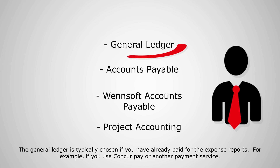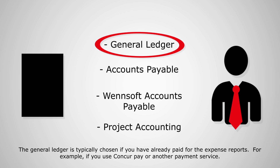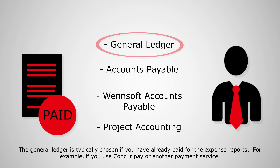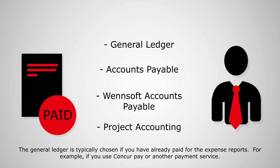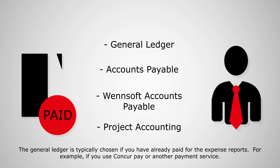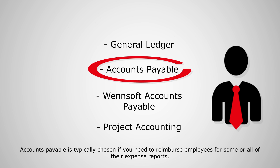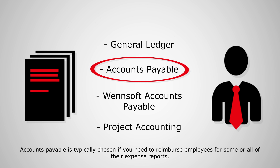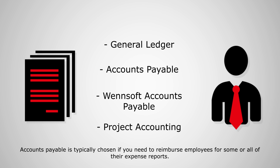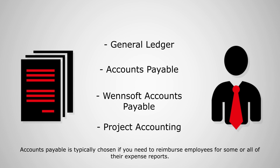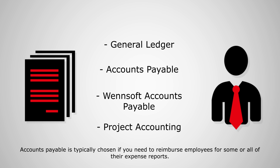The General Ledger is typically chosen if you have already paid for the expense reports — for example, if you use ConcurPay or another payment service. Accounts Payable is typically chosen if you need to reimburse employees for some or all of their expense reports.